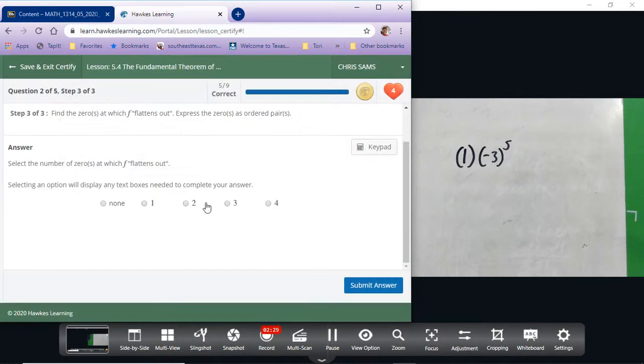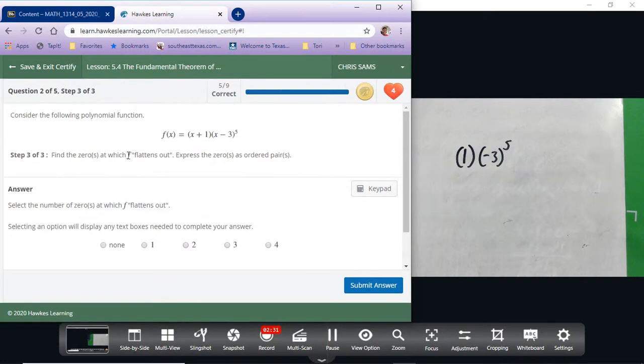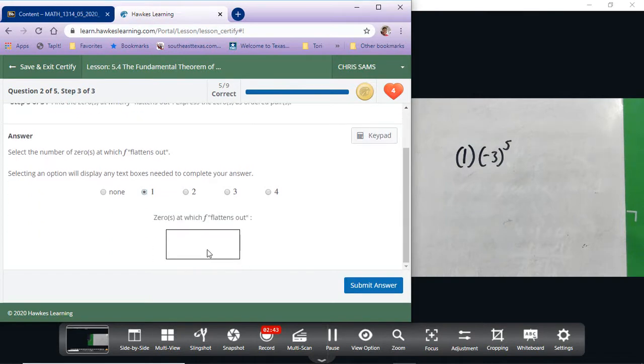Okay, and now it wants to know which ones flatten out. So again, the ones that are bigger than one will flatten out. There's only one of them, and that was the positive 3, so there's going to be one of them, and it's going to be positive 3, 0 as an ordered pair.